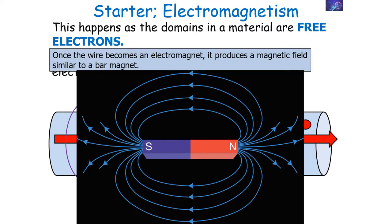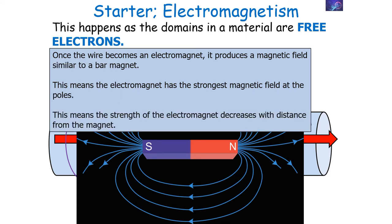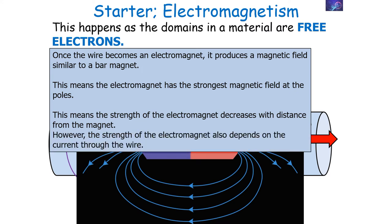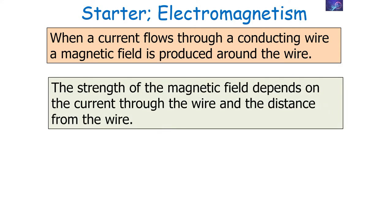Once the wire becomes an electromagnet, it produces a magnetic field similar to a bar magnet, meaning it has its strongest magnetic field at the poles where the field lines are closest together. The strength of the electromagnet decreases with distance from the magnet, as the field lines spread apart. The strength of an electromagnet also depends on the current through the wire. When a current flows through a conducting wire, a magnetic field is produced around the wire, and its strength depends on both the current and the distance from the wire.